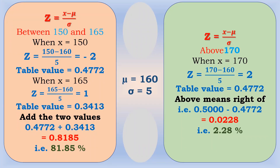For the first part, between 150 and 165: when x equals 150, z-score equals 150 minus 160 divided by 5, giving z equals minus 2. The table value for minus 2 is 0.4772. When x equals 165, z-score equals 165 minus 160 divided by 5, giving z equals 1. The table value for 1 is 0.3413. They are on either side of the curve, so we add: 0.4772 plus 0.3413 equals 0.8185.